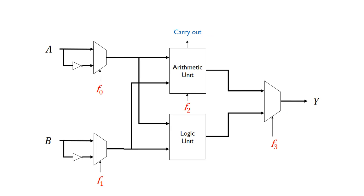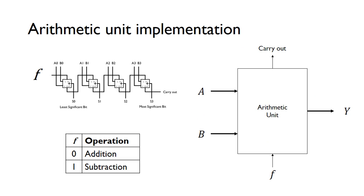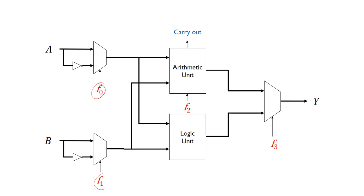Now we can update this top-level design again. We have the same control bits as before, but now we need an extra control bit that selects between addition and subtraction by controlling the carry-in. There is also another output now — because from the ripple carry adder we have a carry-out, so this is an extra output from our ALU. The control bits are renumbered: 0, 1, 2, 3.